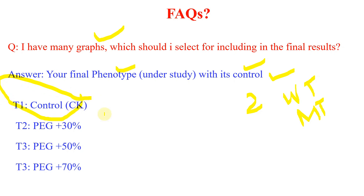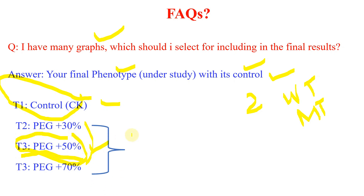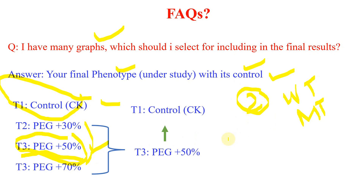...let's suppose your phenotype gives the best results at T3. You want to interpret and defend the phenotype of that treatment and compare it with the control. So you would select T3 as your final phenotype and compare it with the control (CK). At a time you can only compare two treatments because more than two comparisons in GO term analysis is not possible. You then provide a comparison of your final phenotype always against its control.